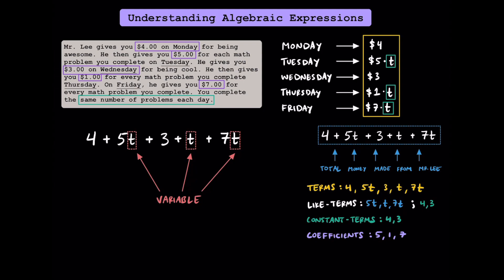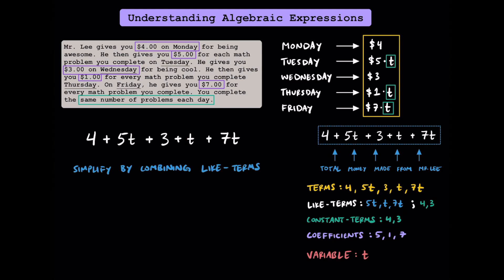The last important piece to point out is the variable. While algebraic expressions could have more than one variable, this particular expression just has one. The one variable we have here is t, and that represents the number of problems that you do each day. It turns out you can simplify algebraic expressions by combining like terms.